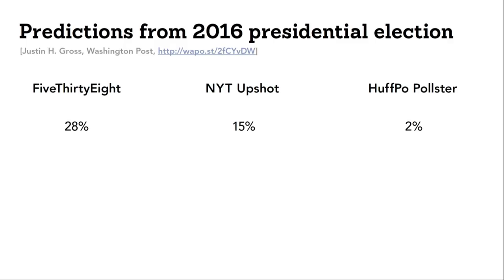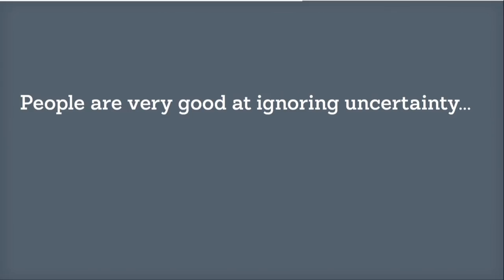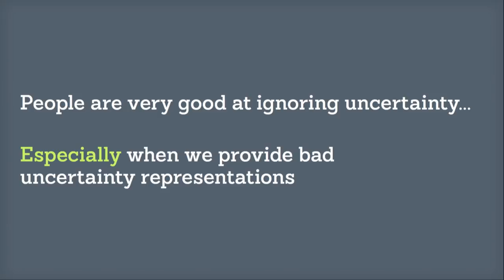This is called a risk communication theater. The idea is I give you a ticket to a random seat in this theater; the seats are colored black in proportion to the chance of Trump winning the election. I hope you might agree that you would be a little less surprised to end up in a black seat than when I just told you the chance was 28%. The lesson is that people are very good at ignoring uncertainty, especially when we provide bad uncertainty representations. We can't just provide whatever uncertainty representation we like and hope our users figure out how to use it.